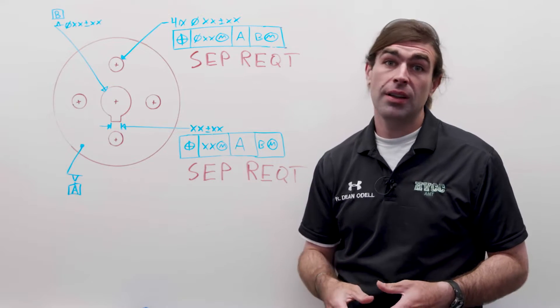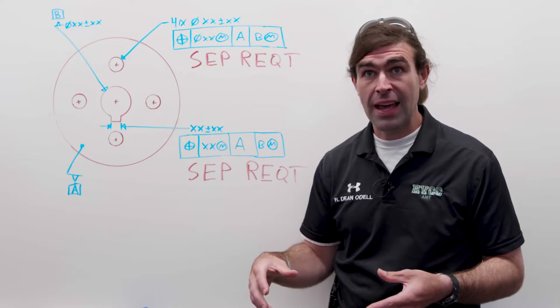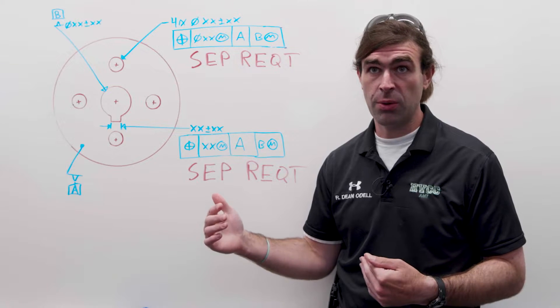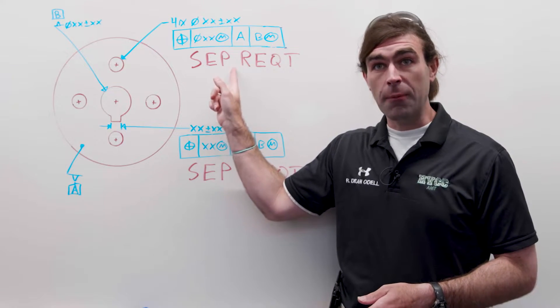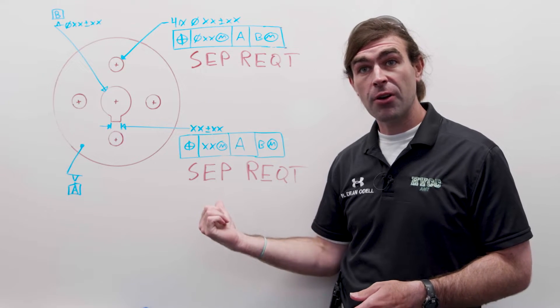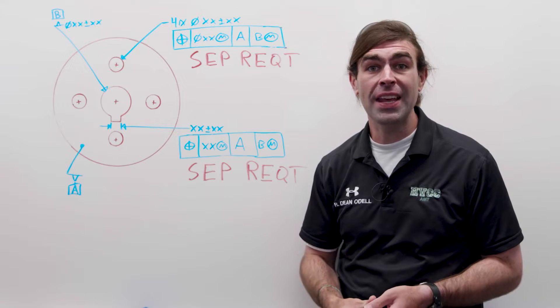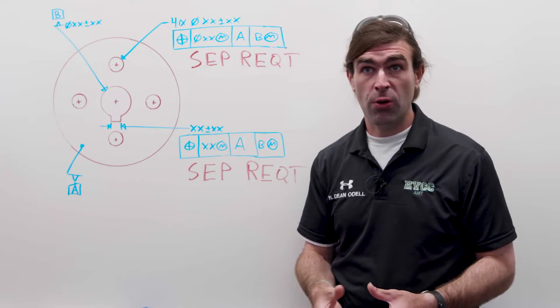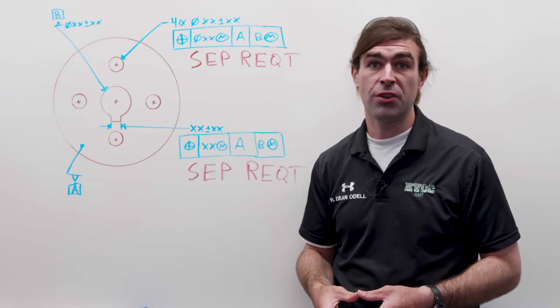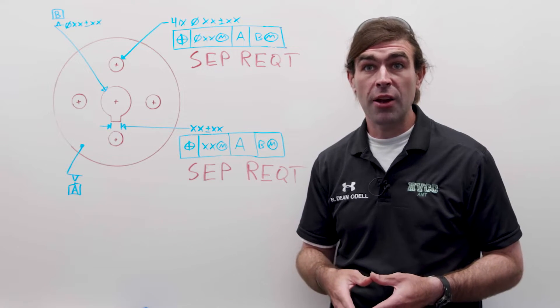In addition, inspection-wise, it's easier if you wanted to use hard gauges. Now you have two hard gauges. Since it's a separate requirement, you have one hard gauge to check the holes, and then another hard gauge to check the keyway. If you have simultaneous requirements, it's implied that you have to have a single gauge to check all the features at once. So there's some upside to using separate requirements.